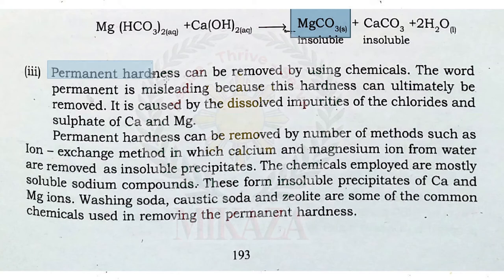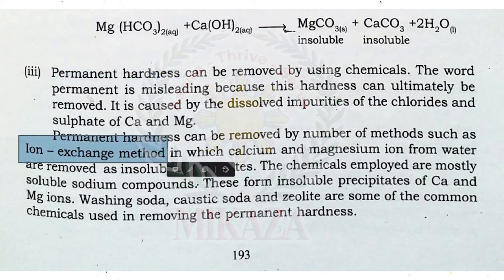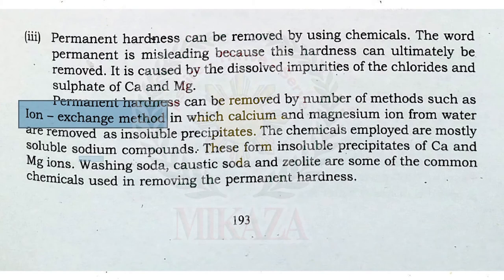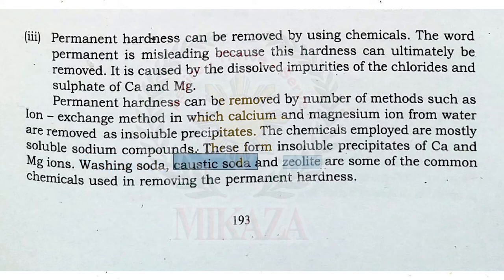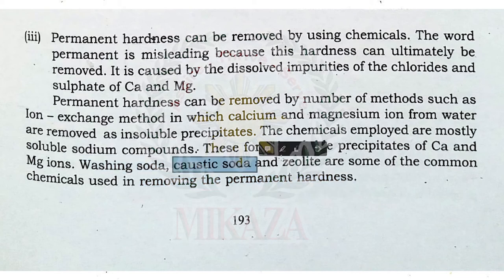Next we have permanent hardness. Although it is called permanent hardness, it is not truly permanent — it is just more difficult to remove compared to temporary hardness. Permanent hardness can be removed by ion exchange methods. We can use washing soda, caustic soda, or zeolite. These are the three chemicals used to remove permanent hardness.